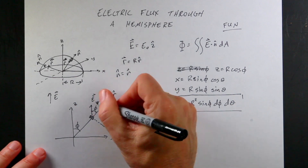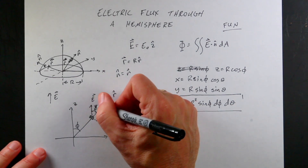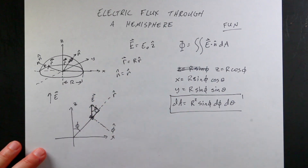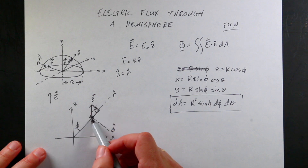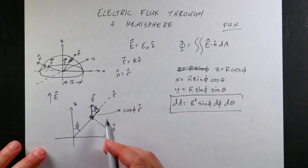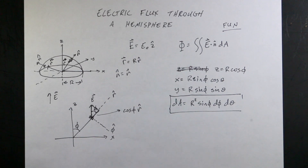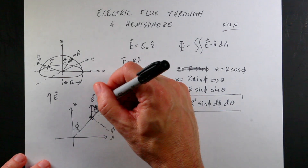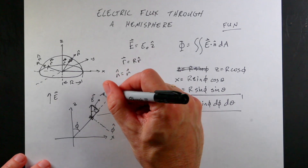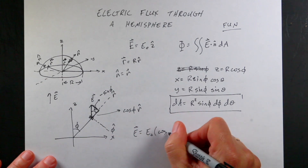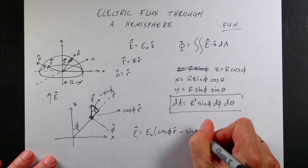If I look at this and want to find out how much of z-hat is in the r-hat direction — let's call the magnitude just one, so we're dealing with z-hat, and that's the angle φ — then this side would be cosine φ. So cosine φ r-hat is the r-hat component of the vector z-hat. What about φ-hat? It's going to be like the other part, but φ-hat is going the opposite direction, so this is going to be negative sine φ. So I can write E as the vector e0 times cosine φ r-hat minus sine φ φ-hat.